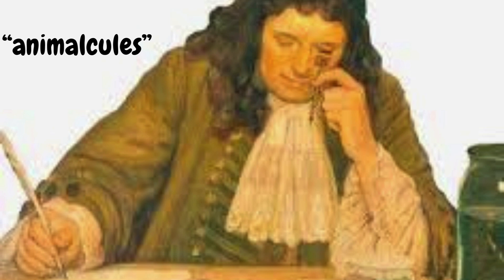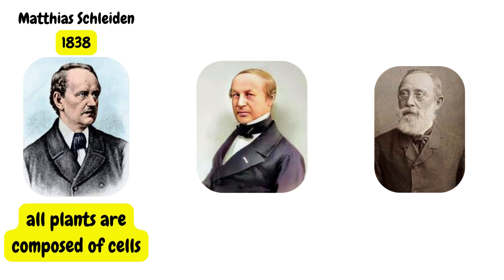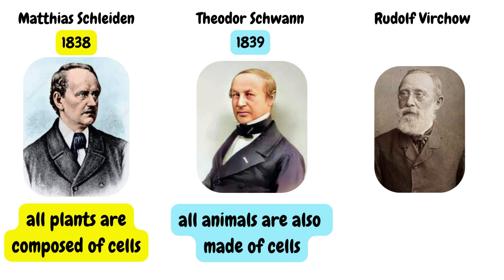The fundamental theory was proposed and refined in the 19th century by three German scientists. Matthias Schleiden, a botanist, who in 1838 concluded that all plants are composed of cells. Theodor Schwann, a zoologist, who extended this observation to animals in 1839, stating that all animals are also made of cells. And then Rudolf Virchow, a physician, who in 1855 added an important third principle.